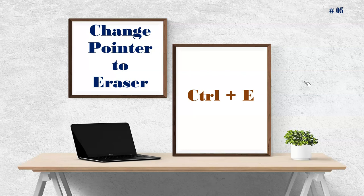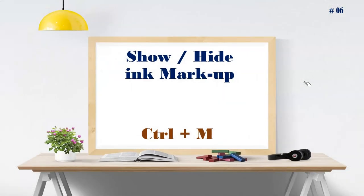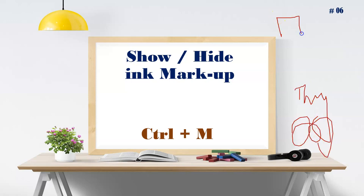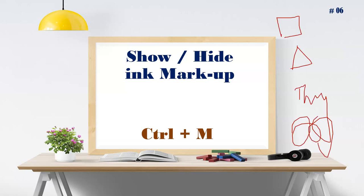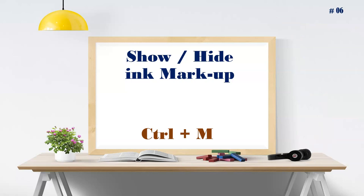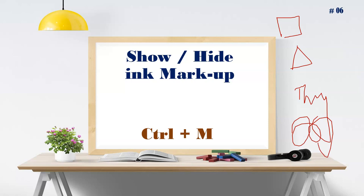The sixth shortcut is show and hide ink markup. After making several annotations — writing a name, drawing a square, a triangle — if you want to hide all the annotations at once rather than erasing them one by one, press Ctrl+E and it will hide everything. Press Ctrl+E again and the same annotations will reappear. This is the way to show and hide markup while delivering online classes.